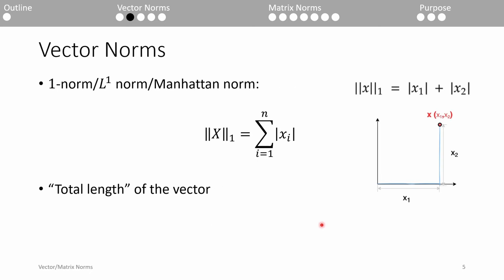When we substitute p equals 1 into the formula from the last slide, we get this equation. This is called the 1-norm, L1-norm, or the Manhattan-norm. We compute the 1-norm by taking the sum of the absolute values of every element in the vector.